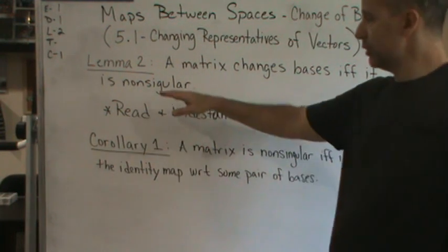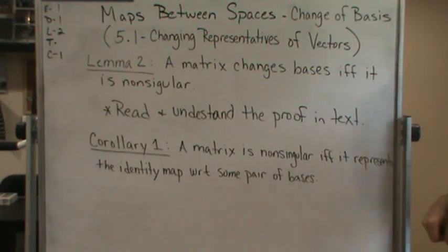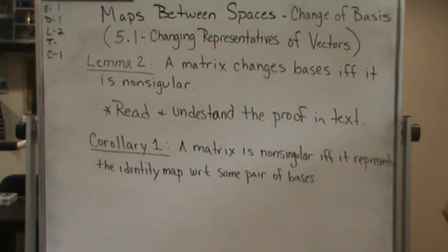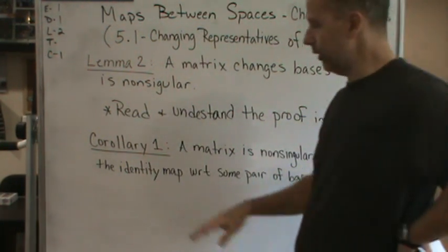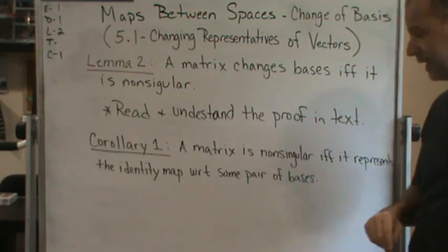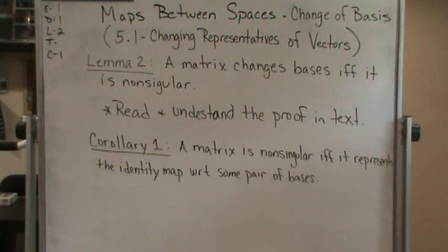So again, Lemma 2 says a matrix changes bases if and only if it is non-singular. Corollary 1 says a matrix is non-singular if and only if it represents the identity map with respect to some pair of bases.